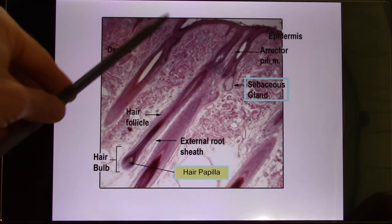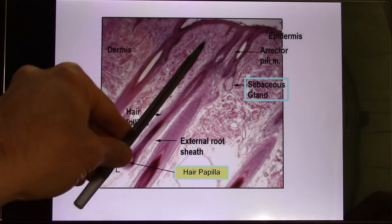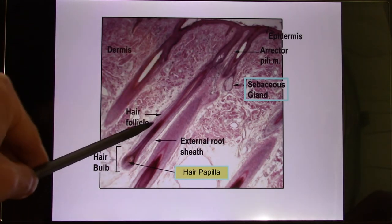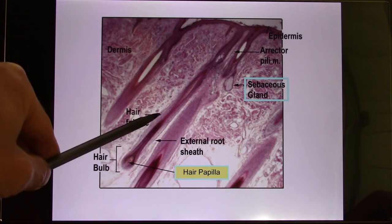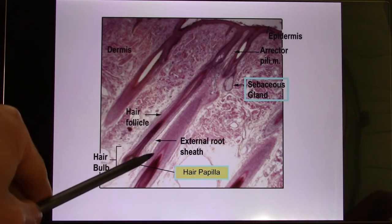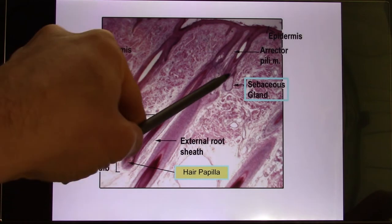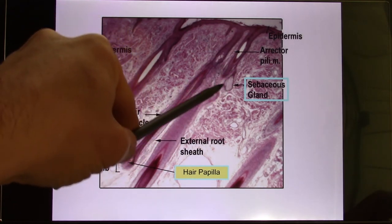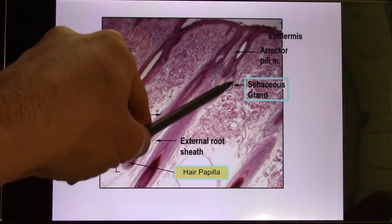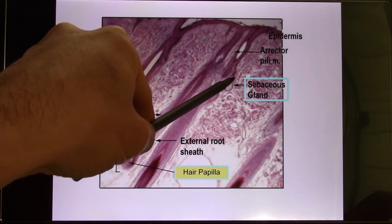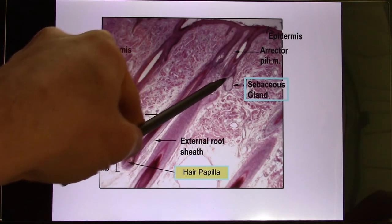So there's the hair, there's the hair follicle — it's much lighter compared with the hair — and there's the sebaceous gland. This one is a pretty small one; you can find some bigger ones.